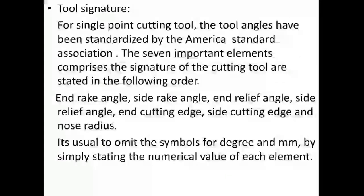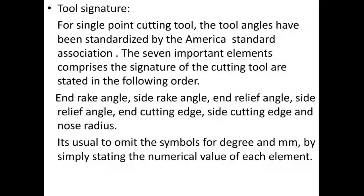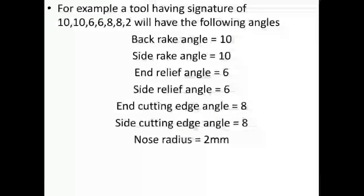Tool signature for a single point cutting tool: the tool angles have been standardized by the American Standard Association. The seven important elements comprising the signature are stated in the following order: back rake angle, side rake angle, end relief angle, side relief angle, end cutting edge angle, side cutting edge angle, and nose radius. For example, a tool with a signature of 10-10-6-6-8-8-2 will have: back rake angle 10°, side rake angle 10°, end relief angle 6°, side relief angle 6°, end cutting edge angle 8°, side cutting edge angle 8°, and nose radius 2.